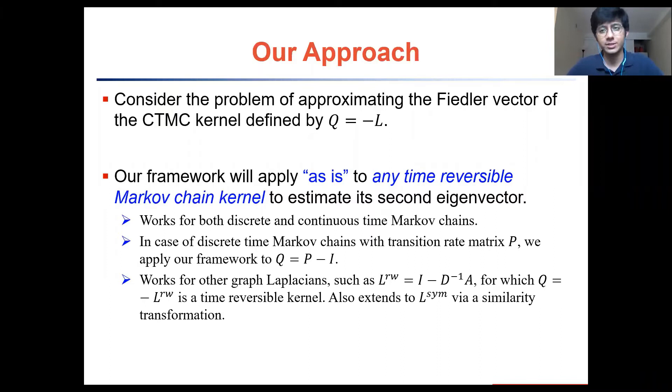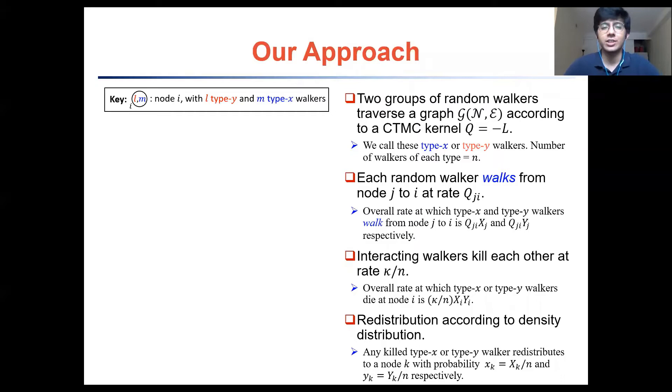We now consider the problem of approximating the Fiedler vector. This is actually the same as approximating the eigenvector corresponding to the second largest eigenvalue of the continuous time Markov chain kernel, Q equals negative L, where L stands for the combinatorial Laplacian. Note that even though we demonstrate our approach for the combinatorial Laplacian as an extension, our framework works as is for any time-reversible Markov chain kernel, including other kinds of graph Laplacian matrices.